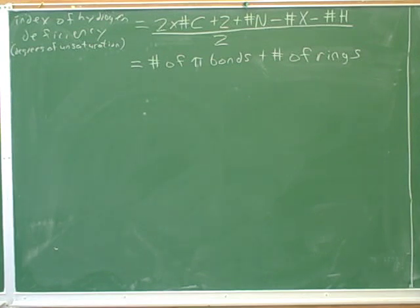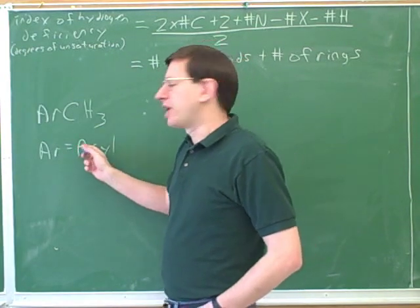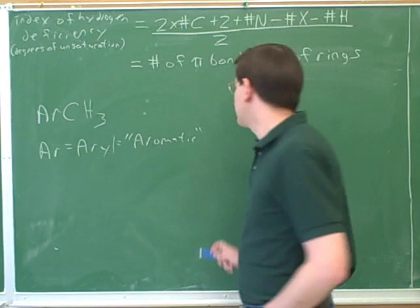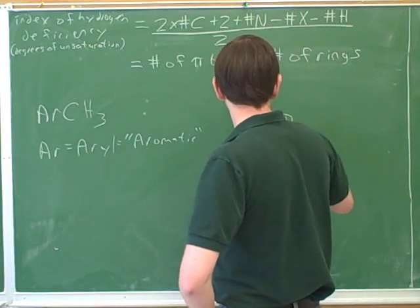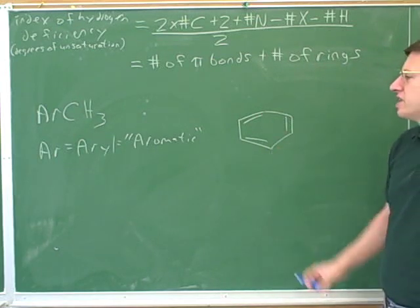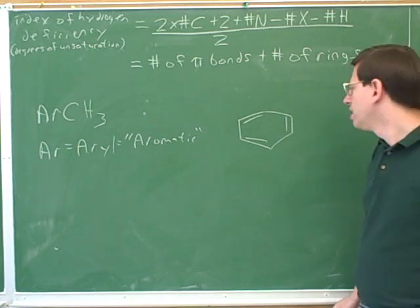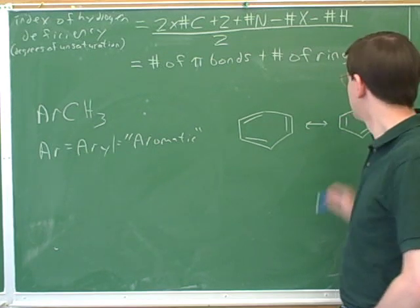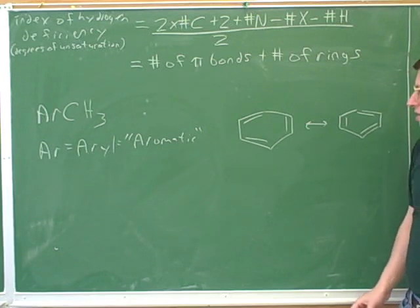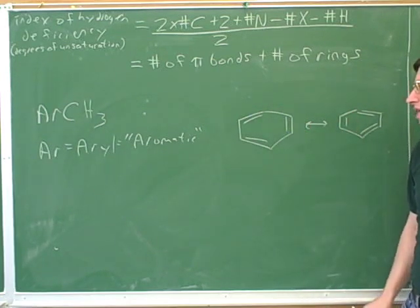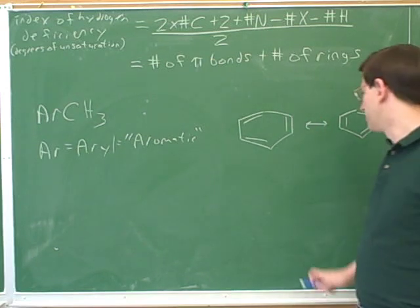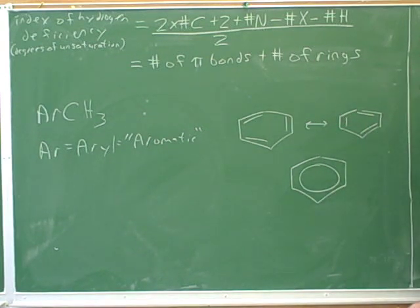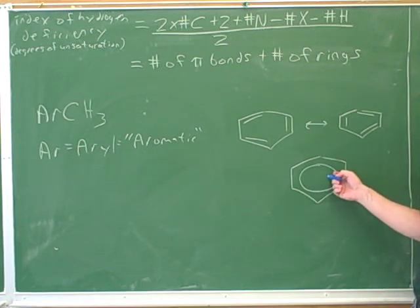AR here stands for aryl, which is really short for aromatic. The most important type of aromatic compound that you're likely to see is benzene. When you see aryl, you should probably be thinking of that as a benzene ring. By the way, benzene has two different resonance forms, which means that all of the bonds here are intermediate between double and single bonds. The best way to draw benzene is with a circle, because that shows that all the bonds are symmetrical to each other.